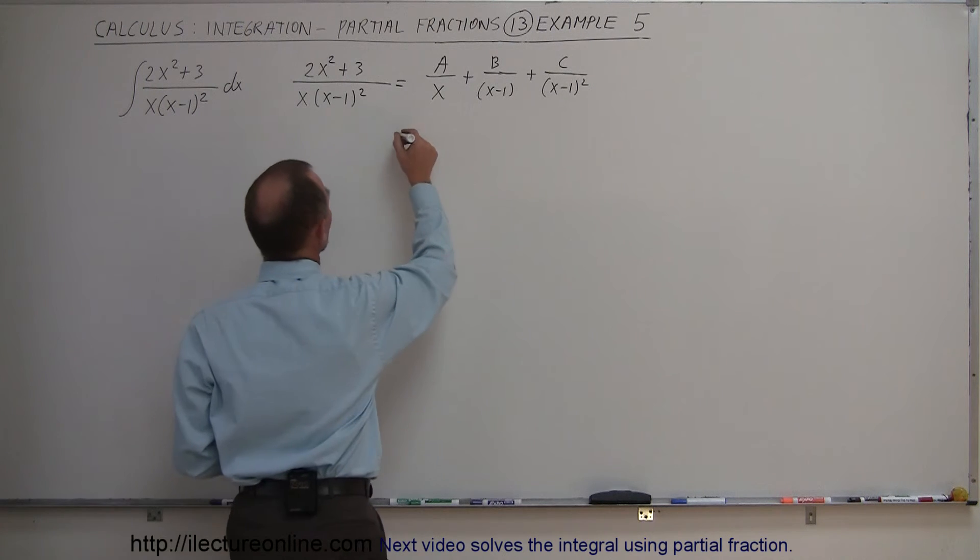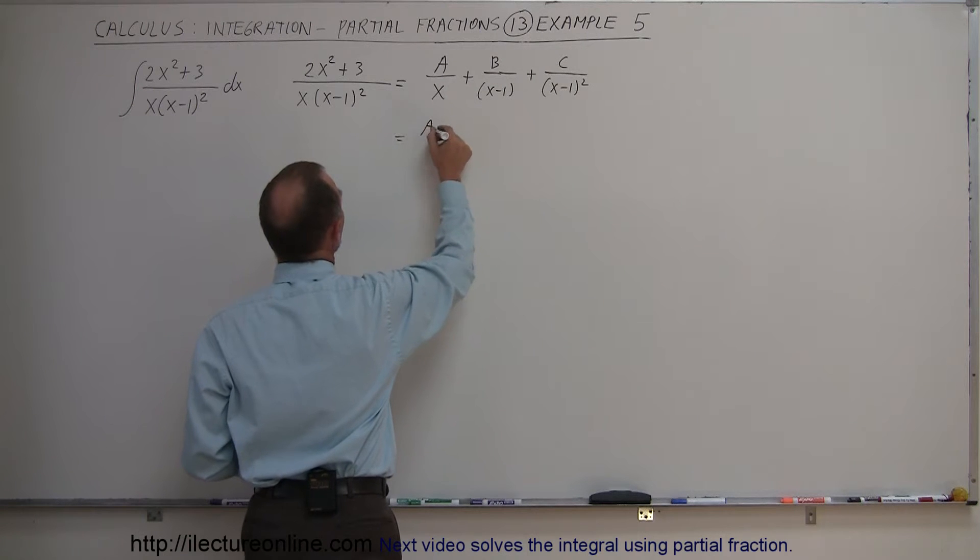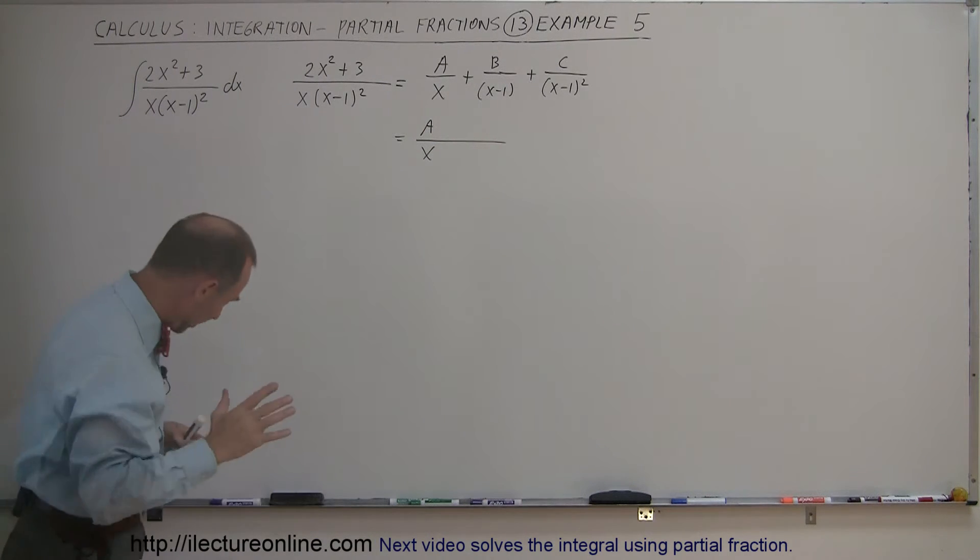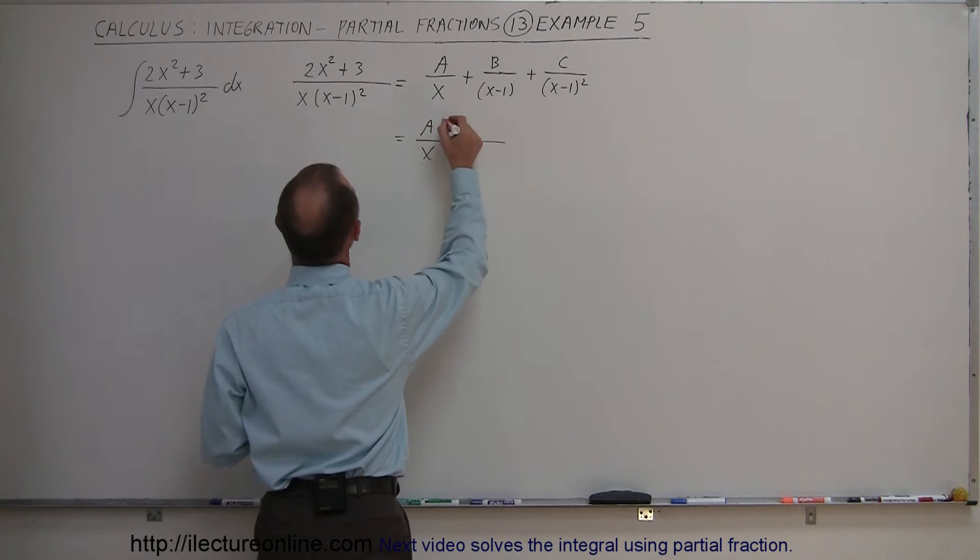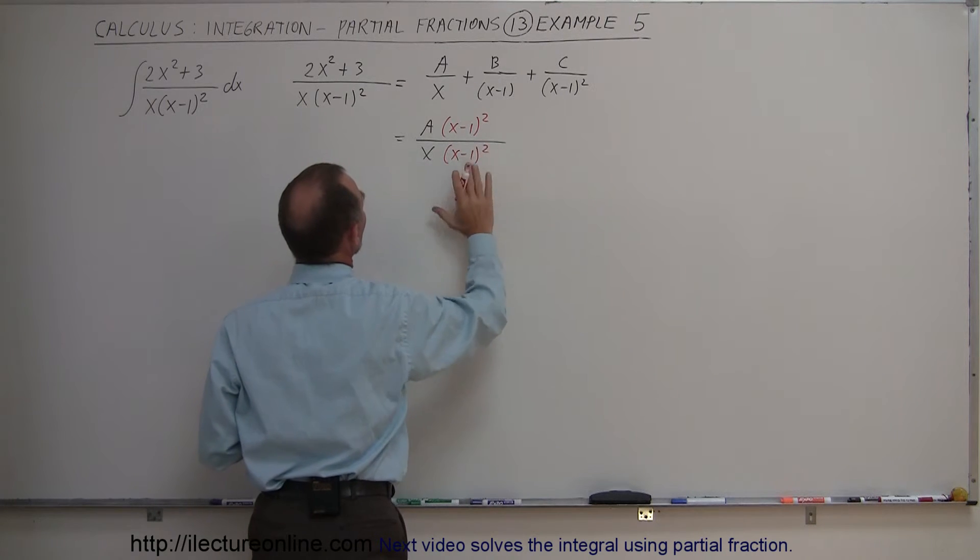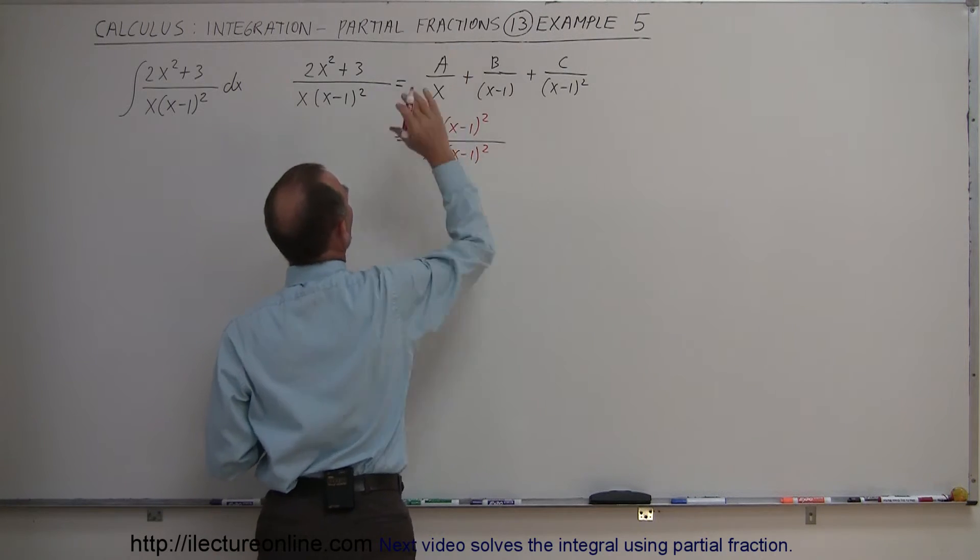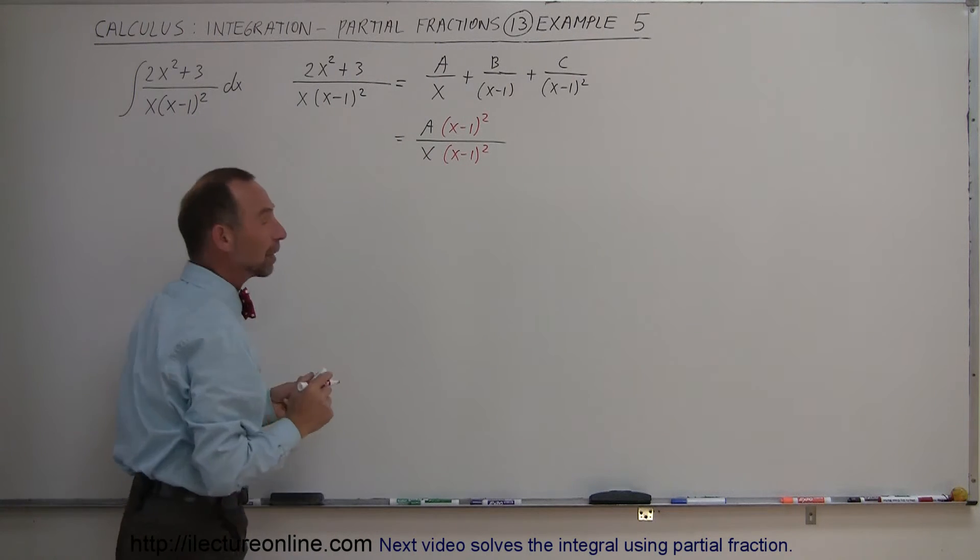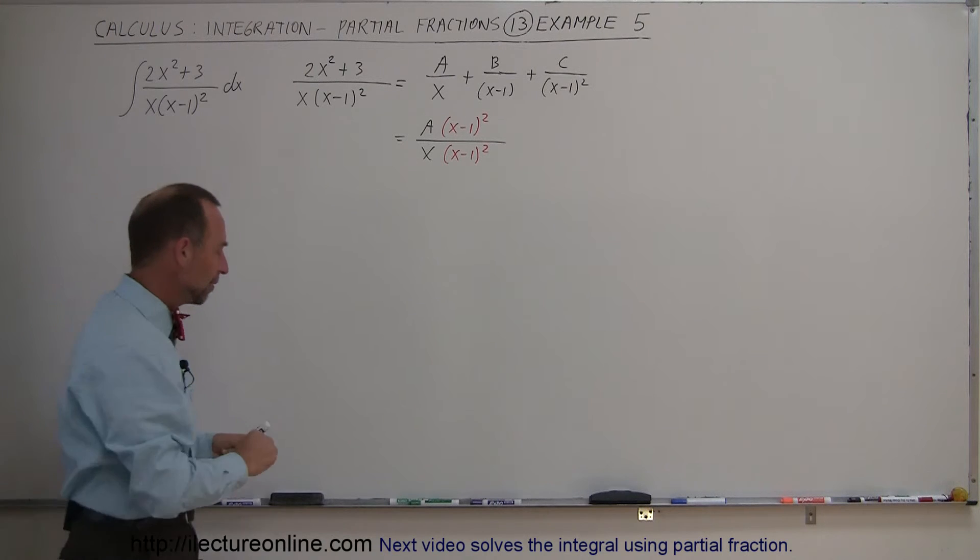Okay, that means this is equal to A times something and x times something. So we need to multiply both the top and the bottom by x minus 1 to the second power. Notice when I cancel that out I'm back to what I started with, but now you can see that this denominator equals this denominator over there. So we need to do that for all three fractions.